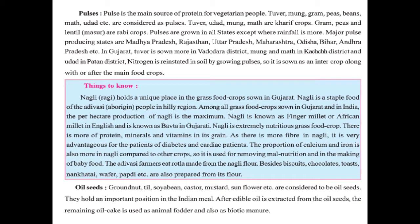Major pulse producing states are Madhya Pradesh, Rajasthan, Uttar Pradesh, Maharashtra, Odisha, Bihar, and Andhra Pradesh. In Gujarat, Tuvar is sown more in Vadodara district, Moong and Math in Kutch district, and Udad in Patan district. Nitrogen is restored in soil by growing pulses, so it is sown as an intercrop along with or after the main food crops.